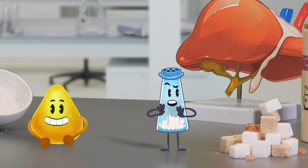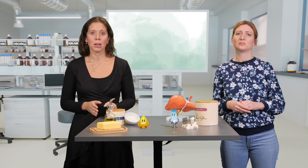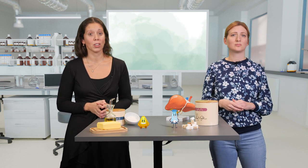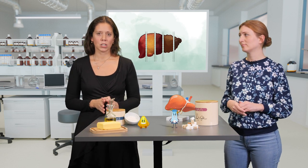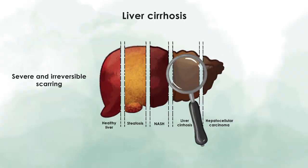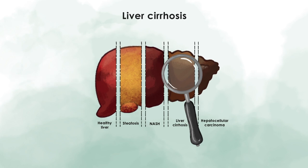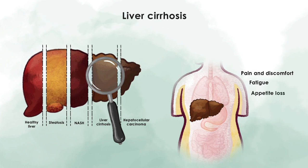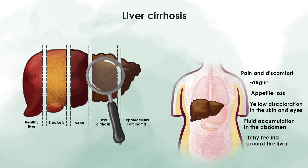Is liver fibrosis still treatable? Yes, when it is detected early enough. However, that is sometimes really hard to diagnose because patients, even with moderate forms of liver fibrosis, might not experience any symptoms. The next stage is cirrhosis, referring to severe and irreversible scarring of the liver tissue. Similar to fibrosis, cirrhosis-related symptoms might not appear until the liver is severely damaged. If they appear, they include pain and discomfort, fatigue, appetite loss, yellow discoloration in the skin and eyes, fluid accumulation in the abdomen, and an itchy feeling around the liver.